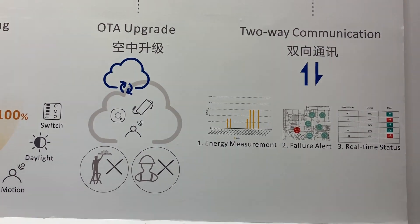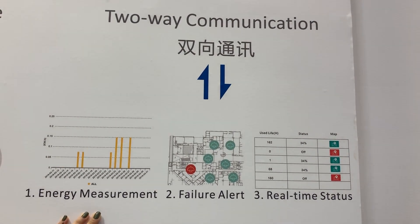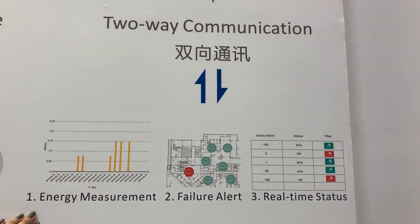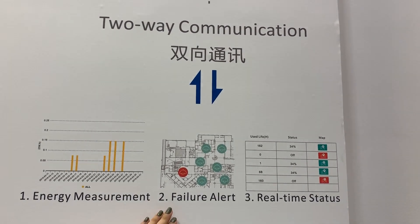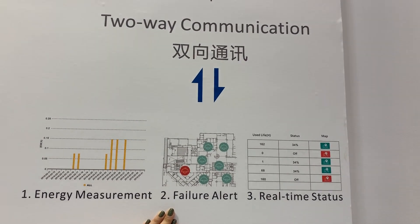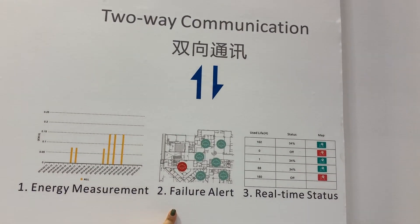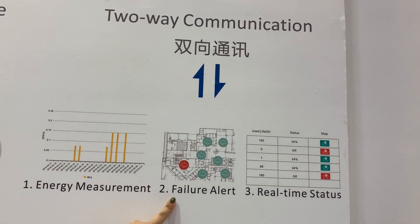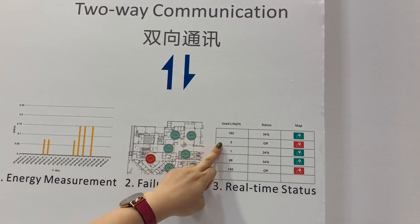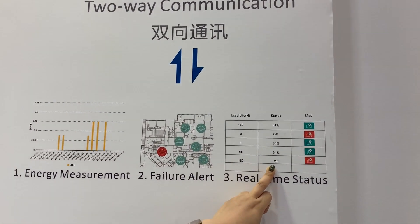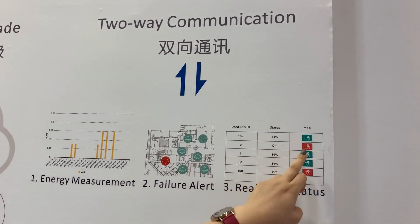Regarding two-way communication, as you can see, there is an energy measurement function where all data is listed day by day and can be generated into reports. For failure alerts, from our server app you can identify which device has failed and where it is. In real-time status, you can see the used life and status of each lamp — whether it's on or off, its brightness level, and its location.